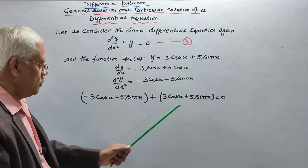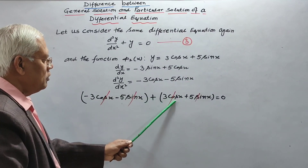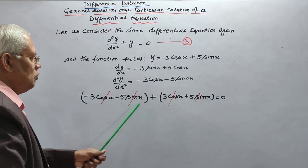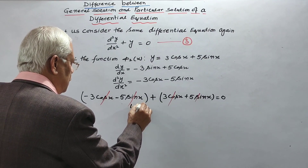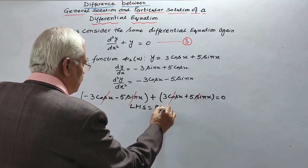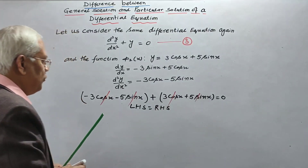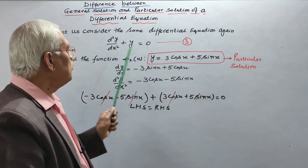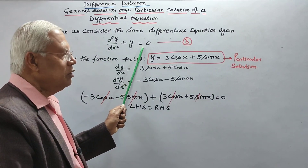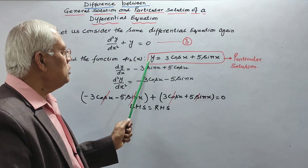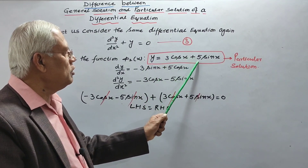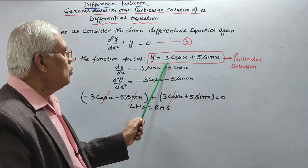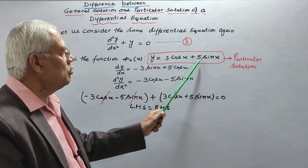Substituting the values of d²y/dx² and y in this equation, we get minus 3 cos x minus 5 sin x plus 3 cos x plus 5 sin x. Minus 3 cos x will be cancelled by plus 3 cos x, and minus 5 sin x will be cancelled by plus 5 sin x. So, 0 equals 0, left hand side equals right hand side. So, y equal to 3 cos x plus 5 sin x is a particular solution of the given differential equation, because it contains no arbitrary constants — only particular values in place of arbitrary constants.